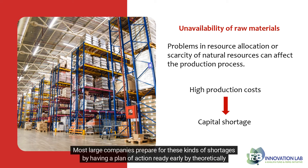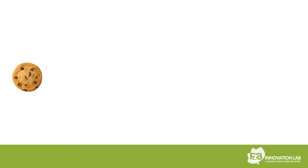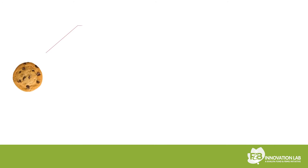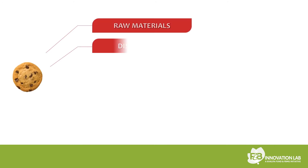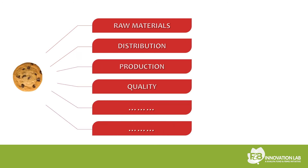Most large companies prepare for these kinds of shortages by having a plan of action ready early by theoretically creating different scenarios. For example, let's say we have chocolate cookies as a product. For this product, the problems may arise with raw materials, distribution, production, quality, and so on.